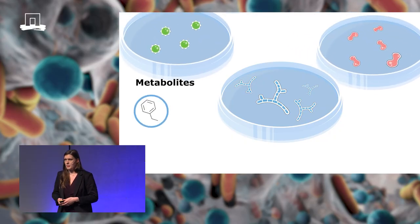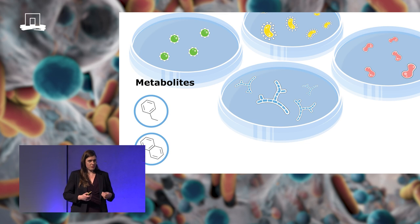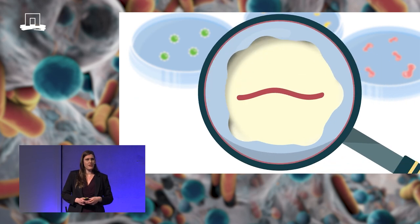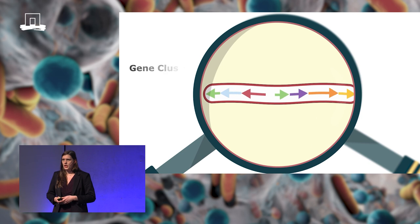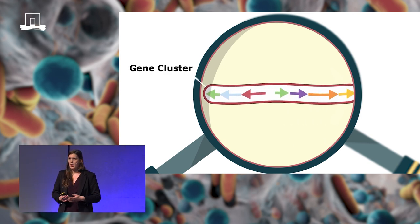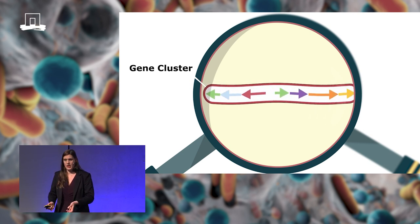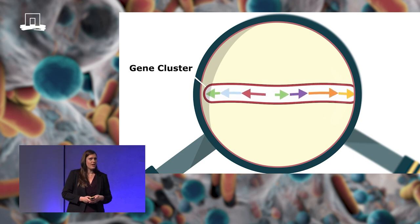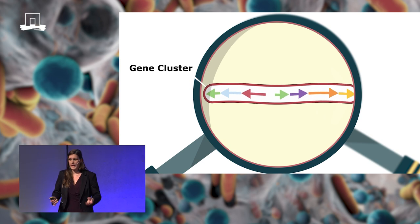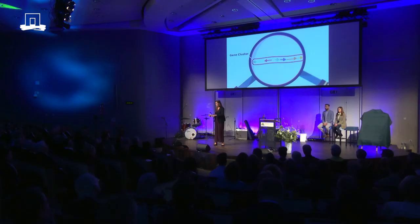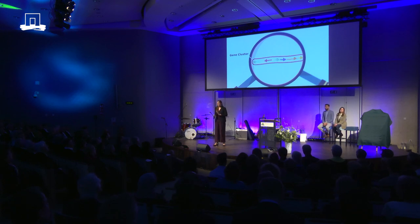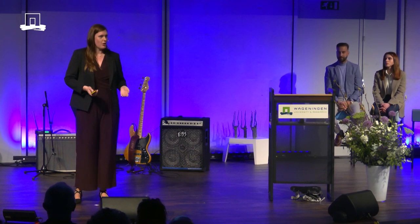Going back into the lab: if we start growing these bacteria, we could start looking at the metabolites they produce. But to fully get the complete picture, we have to look at their DNA — specifically, their genes. We normally show a gene as an arrow. One gene can produce roughly one building block of these metabolites. Very conveniently, in bacteria we very often see that the genes working together to produce the building blocks of one metabolite are clustered together, in what we call a gene cluster.